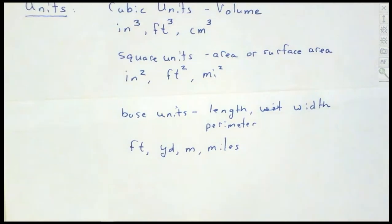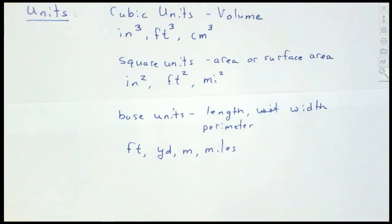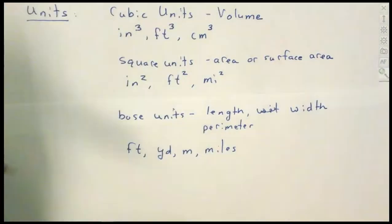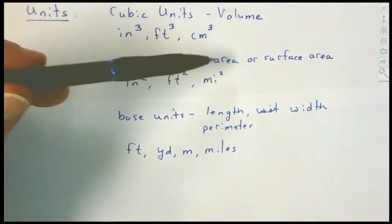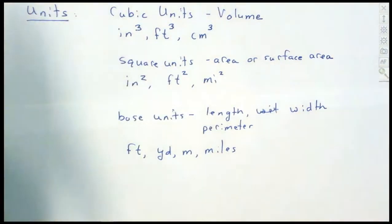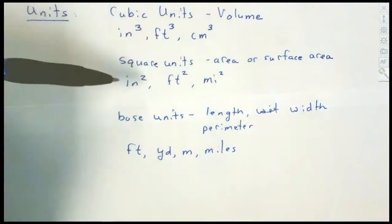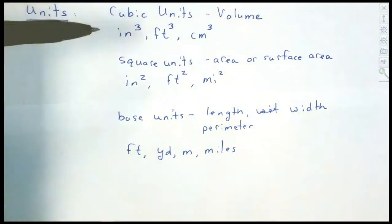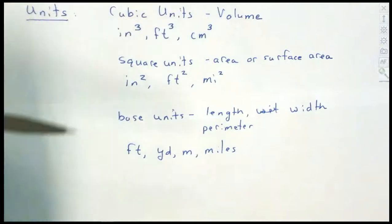This is helpful because sometimes students get confused about what unit to use for their answer. Cubic units relate to volume. Square units relate to either area or surface area. Your base units are going to be your length, width, and perimeter. If it's a length, width, or perimeter you're finding, it's your base unit. Area uses a square unit, and volume usually uses cubic units.